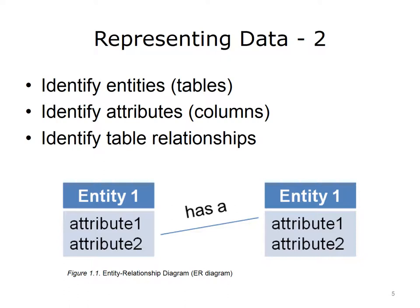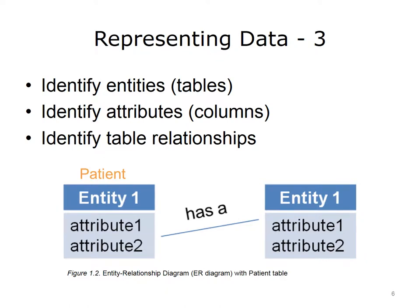Data can be modeled using an entity relationship diagram, also known as an ER diagram or ERD. These diagrams show the entities, their attributes, and the relationships between entities. The relationships are shown using lines and can also be represented in words, such as "has a." For example, if there are two tables — one for storing information about a patient and another for storing information about insurance companies — that relationship can be described as a has-a relationship, since a patient has an insurance provider.